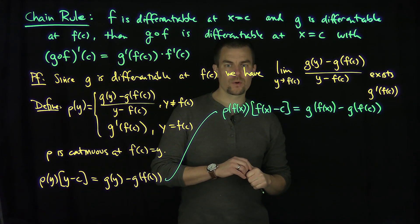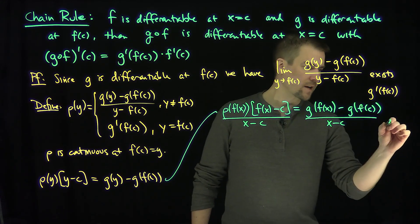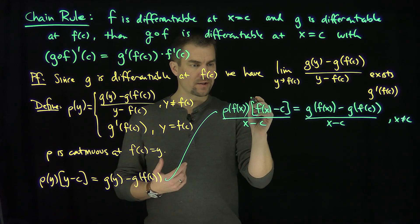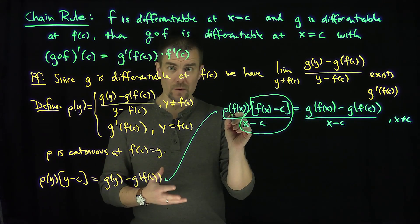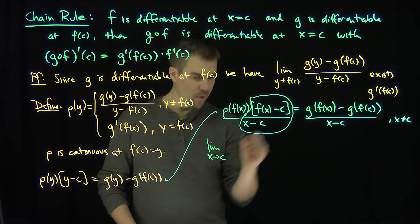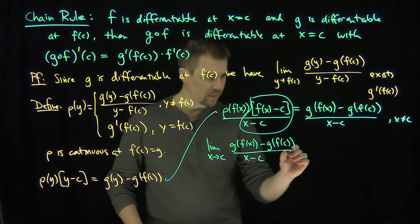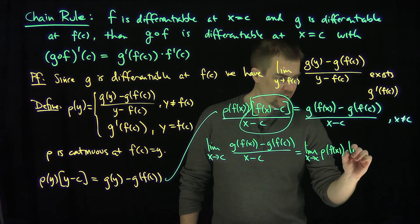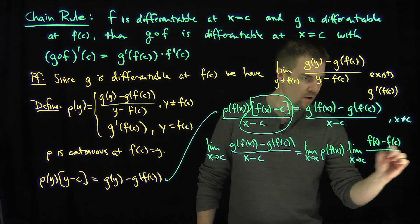Now I can divide both sides of this equation by x minus c, assuming x is not equal to c. For x not equal to c, I divide by x minus c — which corresponds to f of x not equal to f of c. The limit as x goes to c will exist since f is differentiable at c, and rho is continuous, so its limit exists too. Hence, the limit as x goes to c of g of f of x minus g of f of c, over x minus c, equals the limit as x goes to c of rho of f of x, times the limit as x goes to c of f of x minus f of c, over x minus c.